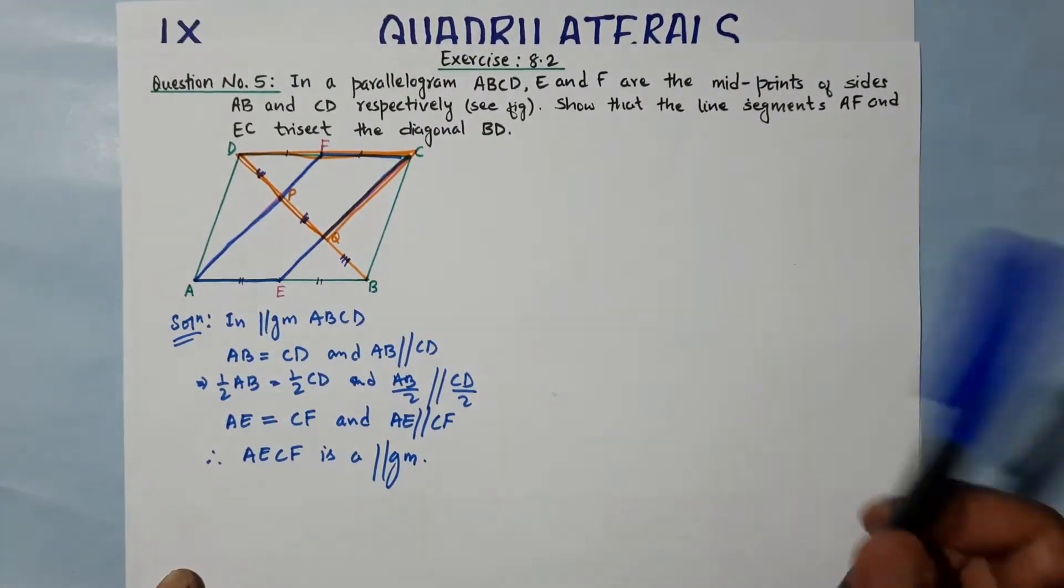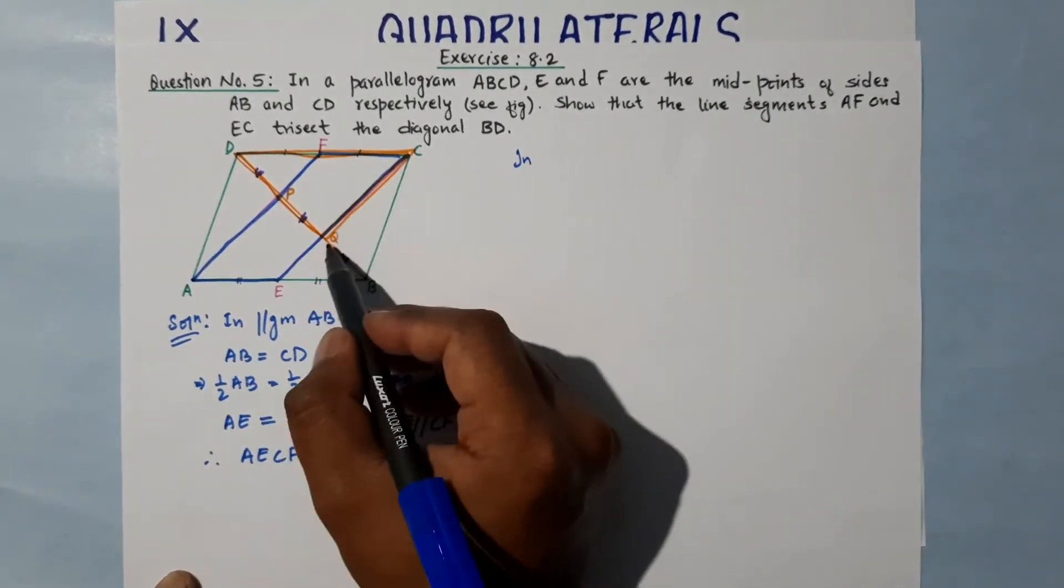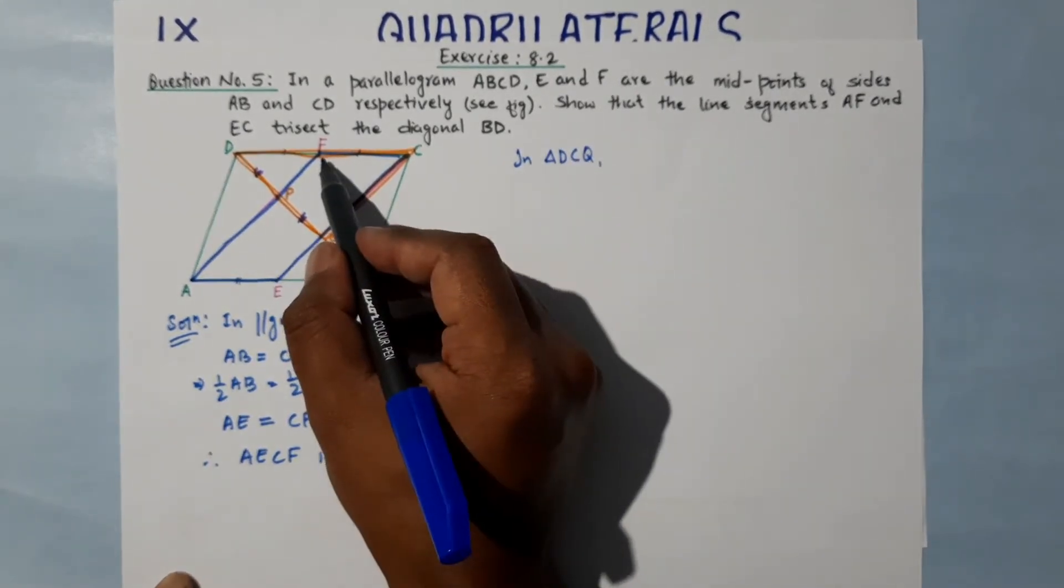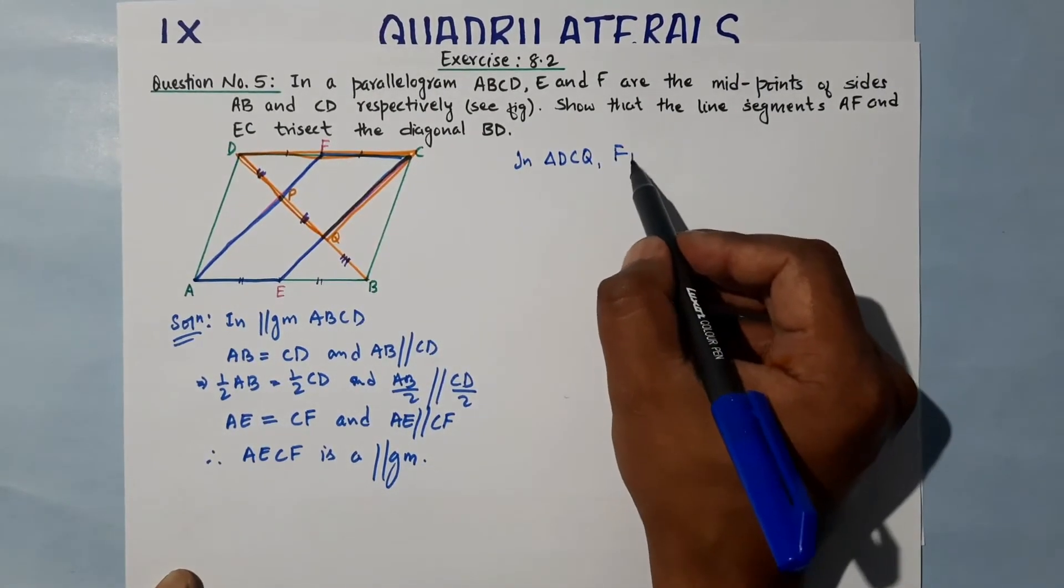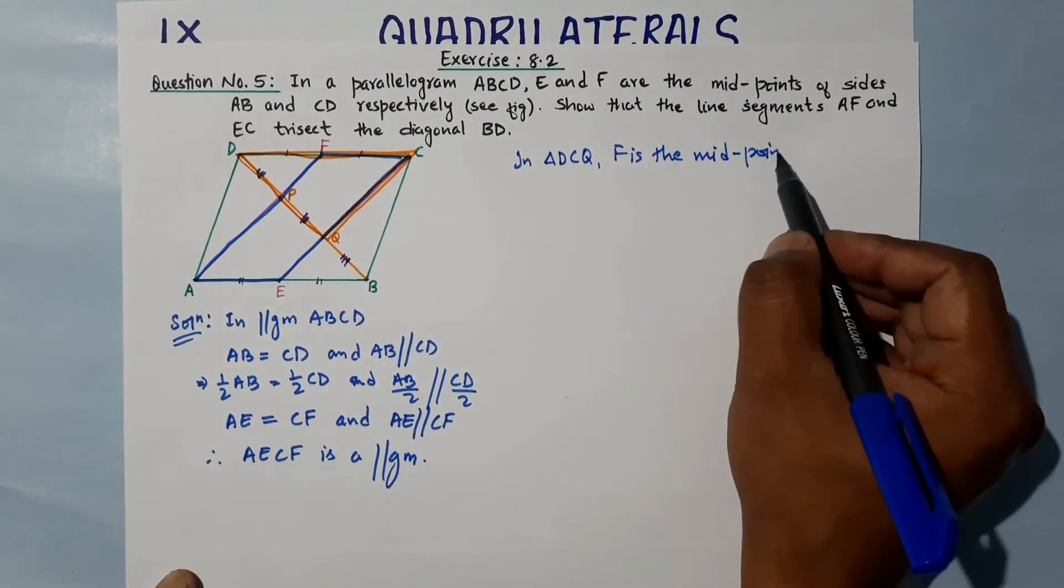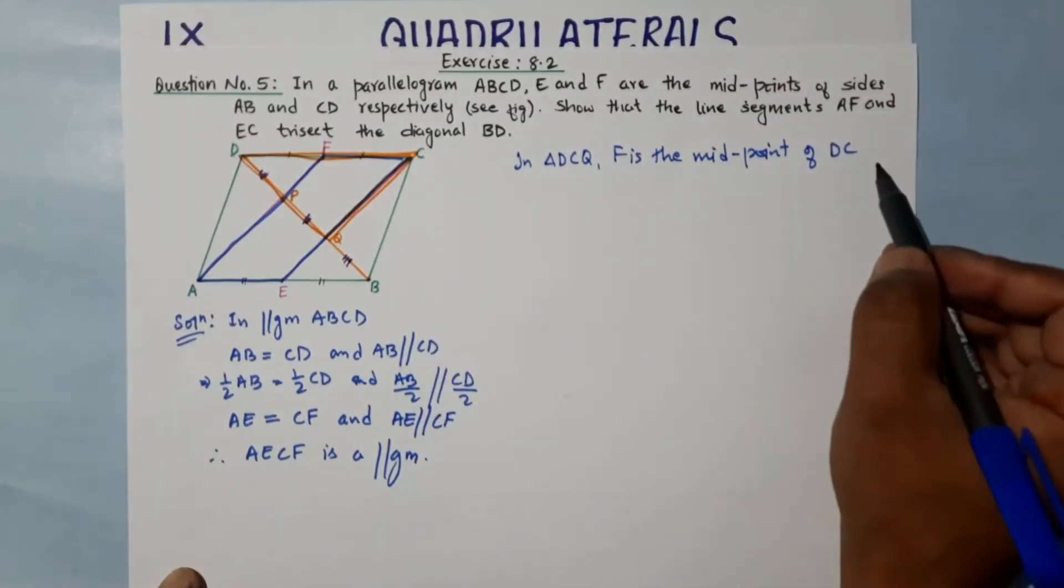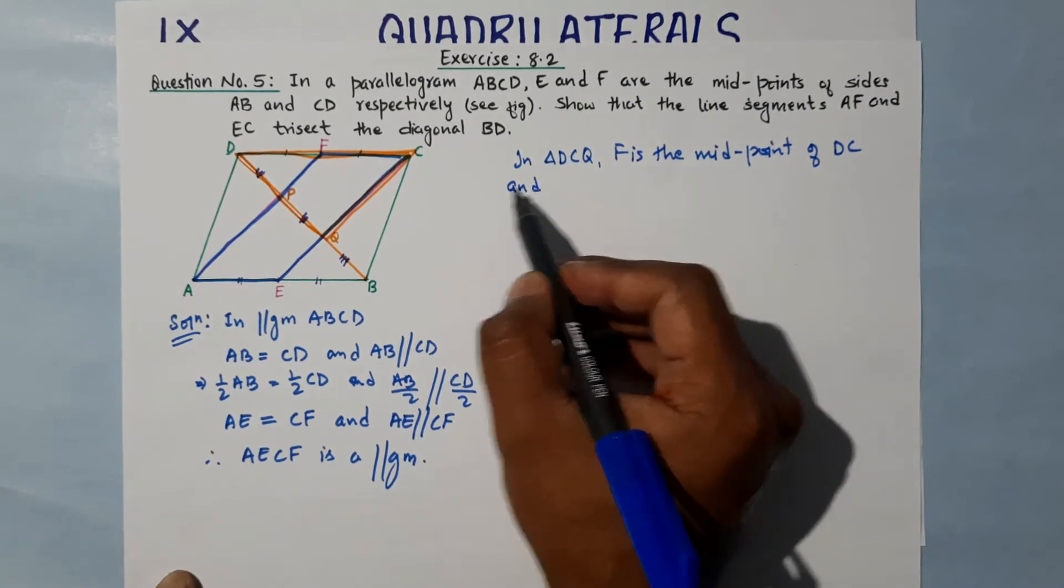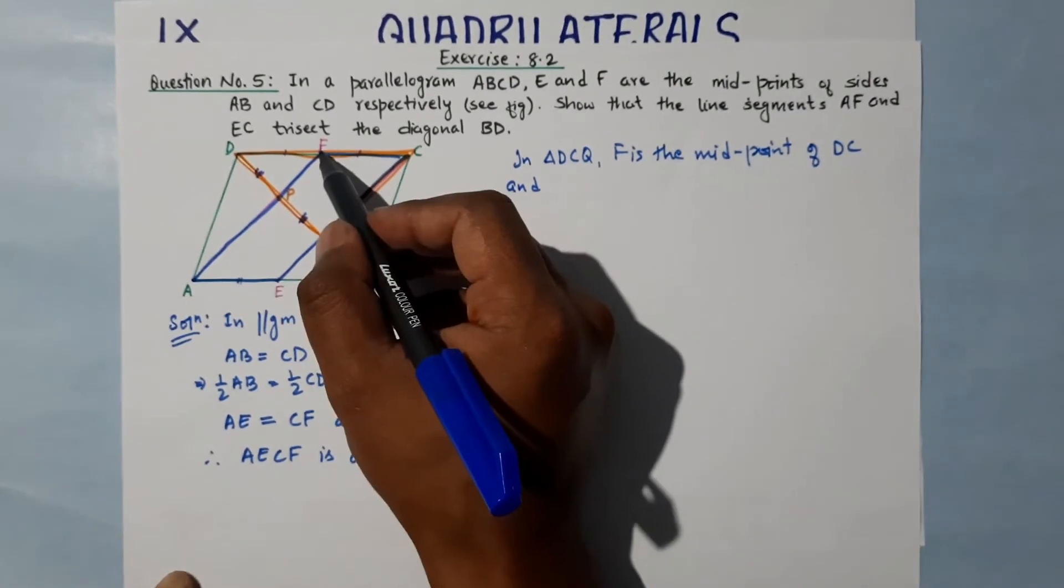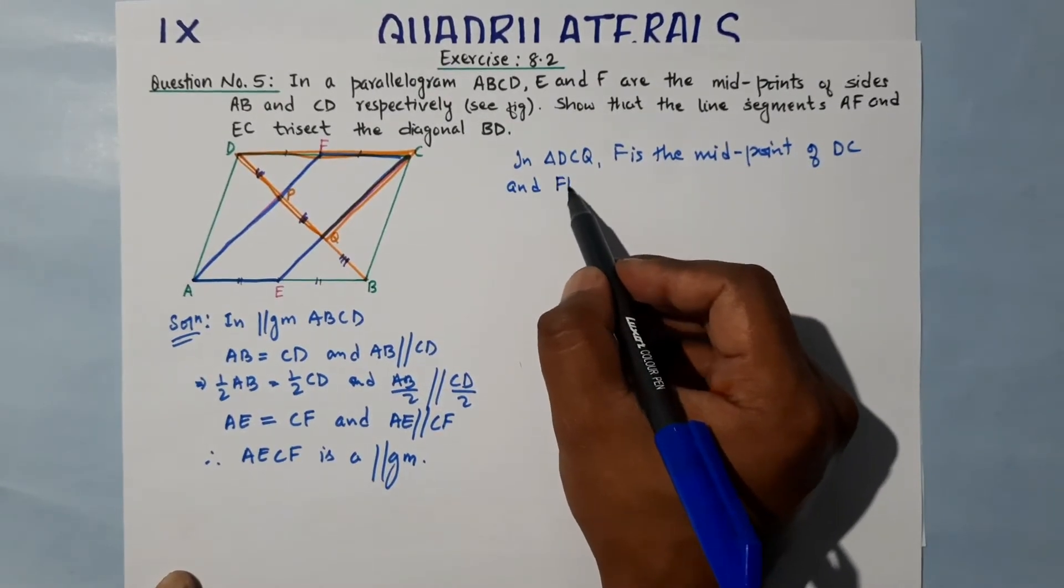So we will use the converse of midpoint theorem. For that we first proved the parallel. Now in triangle DCQ, in triangle DCQ, F is the midpoint of DC, and FP is parallel to CQ...